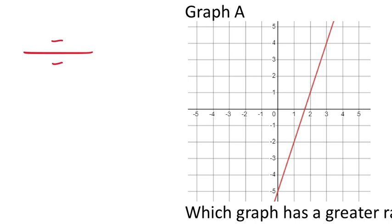I've got my slope formula—my rate of change formula. X is on the bottom and y is on the top from the ordered pairs. Since no interval is given, I'll choose the y-intercept as one of the two ordered pairs. I follow the y-axis, the vertical number line, to where it meets the red line. That's where x = 0, and the corresponding y-value is negative 5.